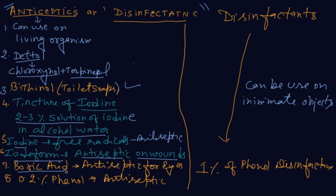Boric acid is a very weak acid — it is not monoprotic — but it is used as an antiseptic and also in carrom powder for the striker. To recap: 0.2% phenol is antiseptic, and 1% phenol is disinfectant. In the next class we will meet with some more drugs — antibiotics, antimicrobials, and antifertility drugs. Thank you guys.